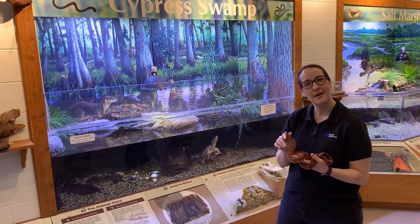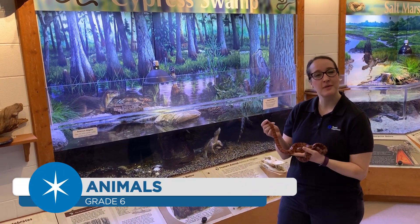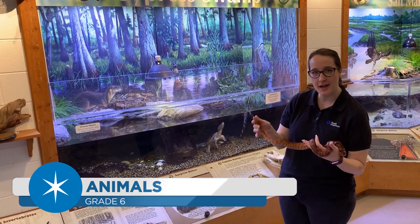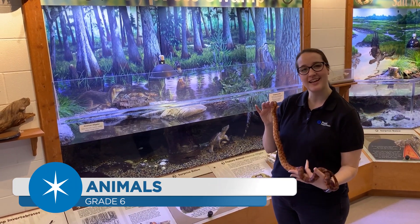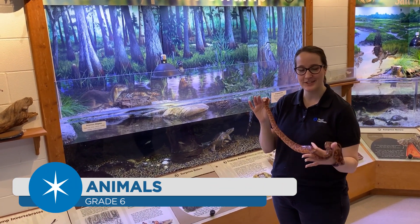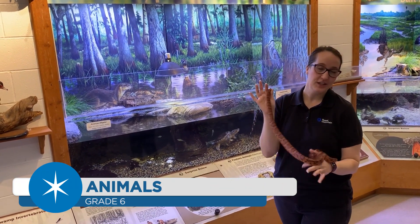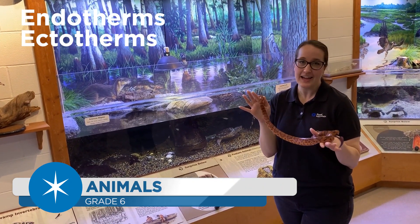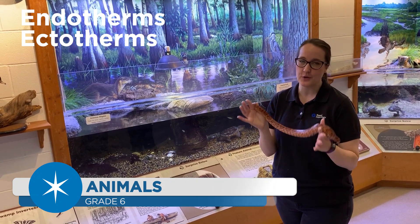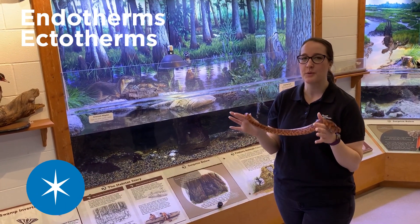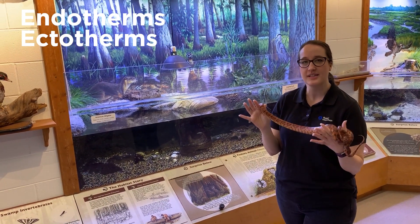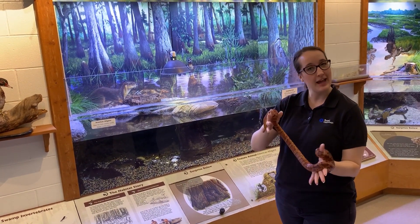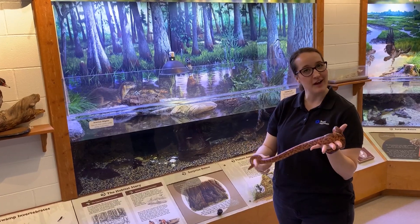Hi, my name is Roshane Robbins. We're here at Roper Mountain Science Center in our ecology lab and I'm the natural science teacher. We are going to talk about endotherms and ectotherms — our cold-blooded and warm-blooded animals — and we're going to introduce two animals to start out.